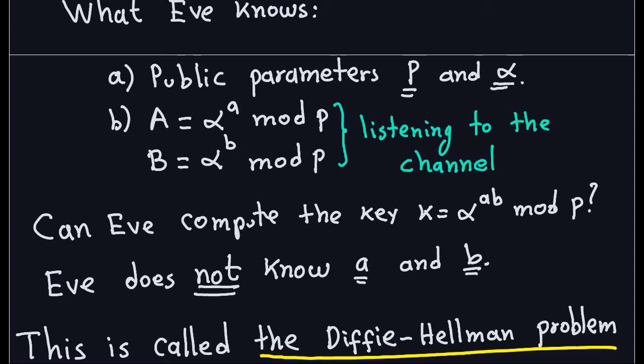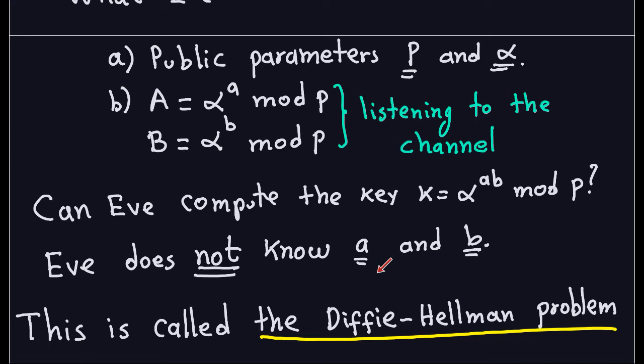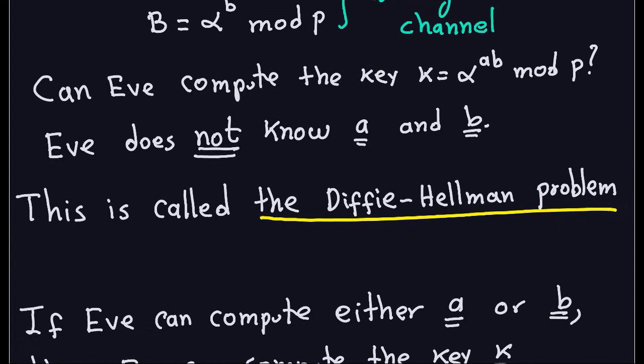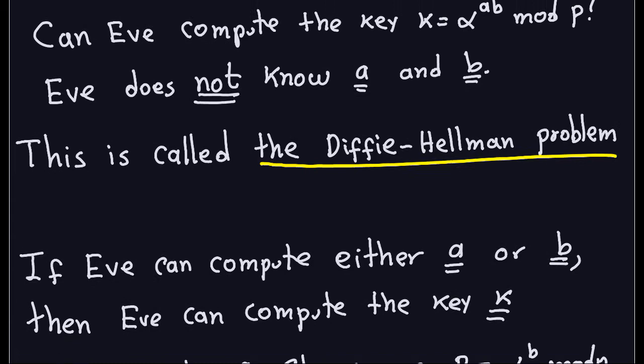Eve doesn't know lowercase a or b, because a is the random number Alice chose and b is the random number Bob chose. If she did know them, computing the key would just be a modular exponentiation since alpha and P are public. The problem of finding the shared key knowing P, alpha, capital A, and capital B is called the Diffie-Hellman problem, and if that problem were easy to solve, the Diffie-Hellman key exchange would not work as a valid key exchange.